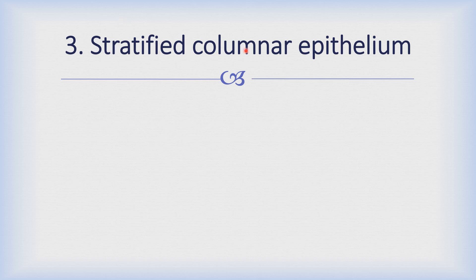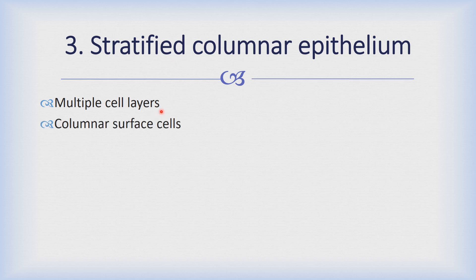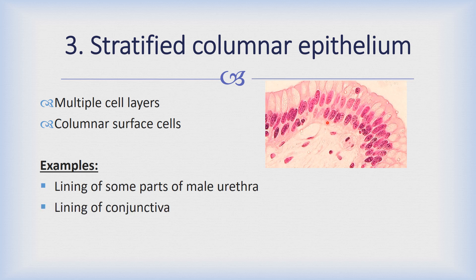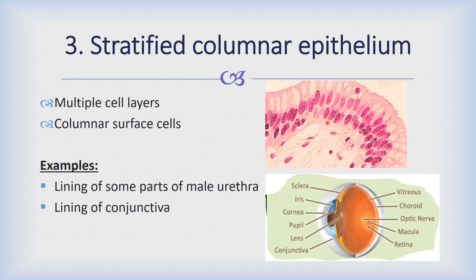The third sub-variety of stratified epithelium is stratified columnar epithelium. As the name indicates, it also contains multiple cell layers and the superficial cells are column-shaped. In this diagram you can see that the nuclei show there are multiple cell layers. This kind of epithelium is present in certain parts of the male urethra and also in the conjunctiva. Conjunctiva is a thin membrane that lines the inner surface of the eyelids and the white area or the sclera on the eyeball.